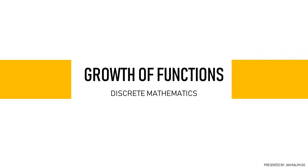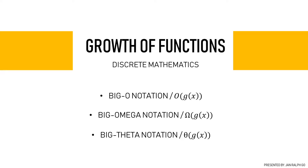Today we are discussing the growth of functions. The growth of functions is often described using a special notation, and it consists of three: the big O notation, the big omega notation, and the big theta notation. These special notations estimate the growth of functions without worrying about constant multipliers or smaller order terms. As such, using these notations means we do not need to worry about the hardware and software used to implement an algorithm.